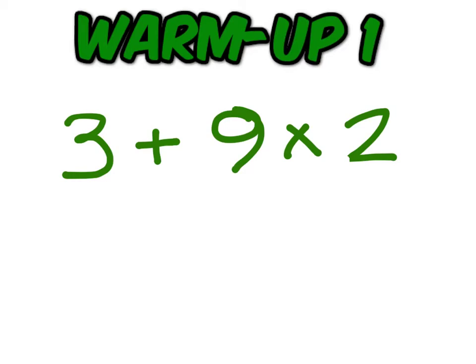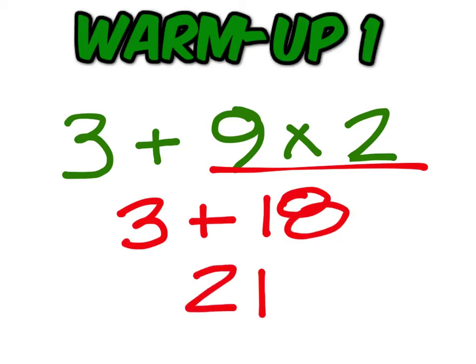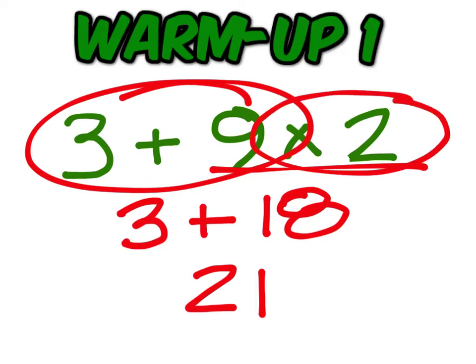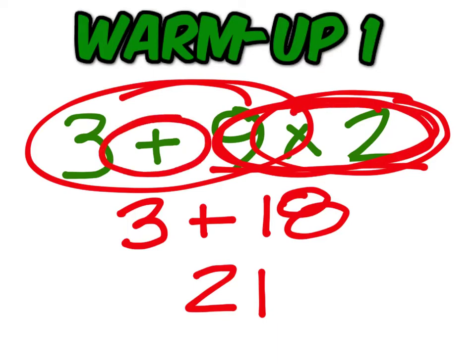On this problem, multiplication comes before addition and subtraction. So you must do 9 times 2 first to get 18, and then add those together to get 21. If you did 3 plus 9 and then times by 2, that's why you ended up with 24. Always do multiplication and division before addition and subtraction.